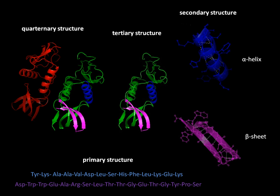Protein folding is the physical process by which a protein chain acquires its native three-dimensional structure, a conformation that is usually biologically functional, in an expeditious and reproducible manner. It is the physical process by which a polypeptide folds into its characteristic and functional three-dimensional structure from a random coil. Each protein exists as an unfolded polypeptide or random coil when translated from a sequence of mRNA to a linear chain of amino acids.